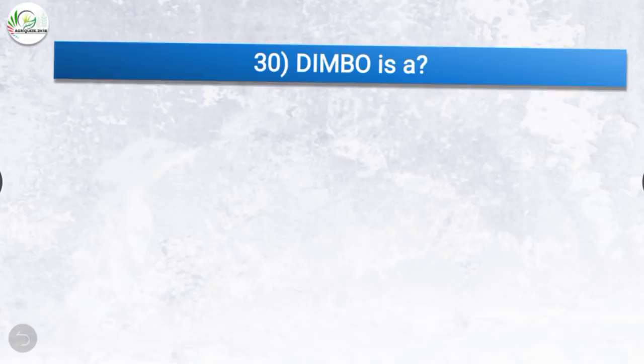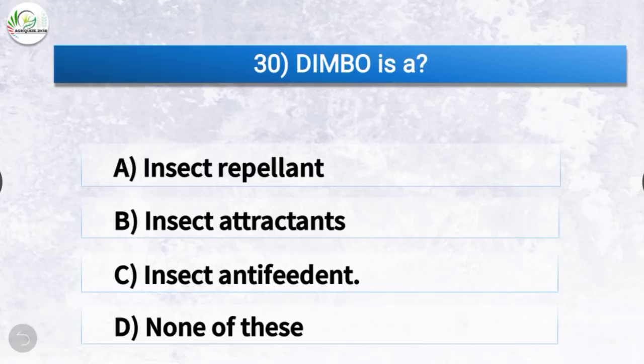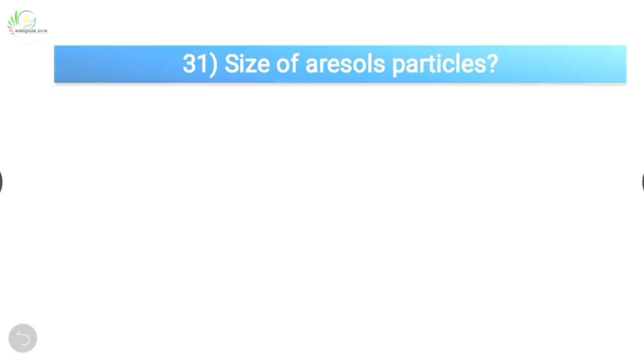Question number 30: Dimbo is a? The correct answer is option C, insect antifeedant. Dimbo is an insect antifeedant.